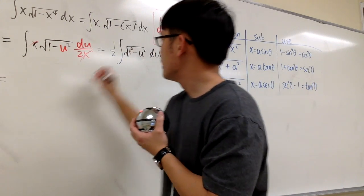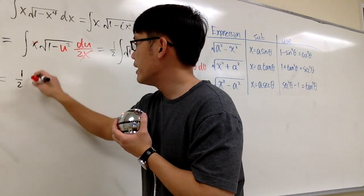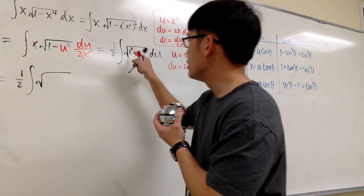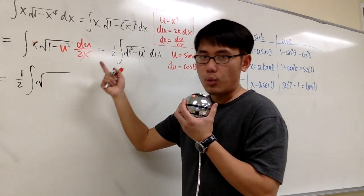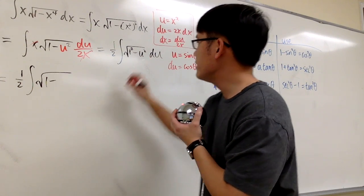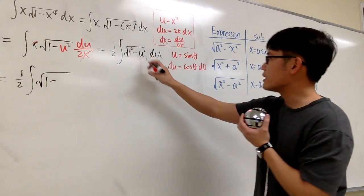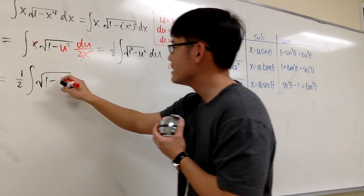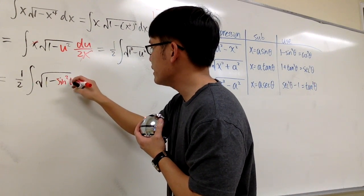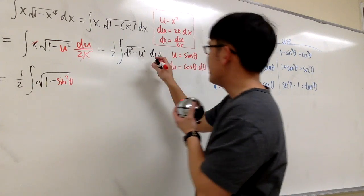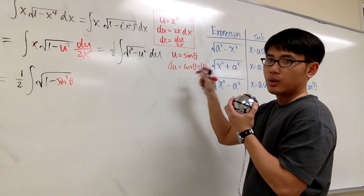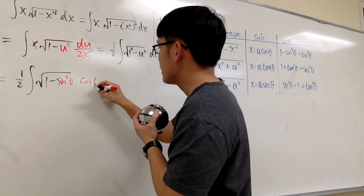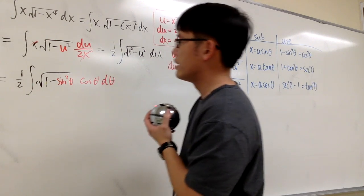So we take the 1 half and put down the integral: inside the square root we have 1 squared, which is just 1, minus u squared, which becomes sine squared theta. And du is cosine theta d theta.